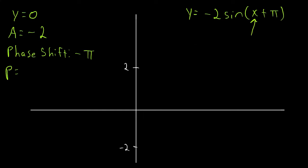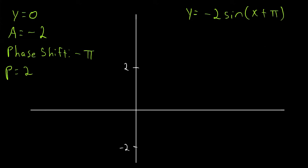Then we just need to find our period. Since the coefficient in front of x is 1, the period is 2 pi divided by 1, which is 2 pi. Then we find our quarter period q, which is a quarter of the period — 2 pi over 4 — which equals pi over 2. We've got all of our information and can now sketch the graph.